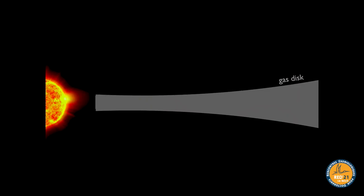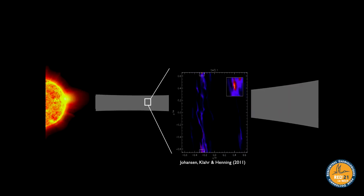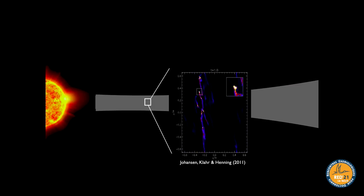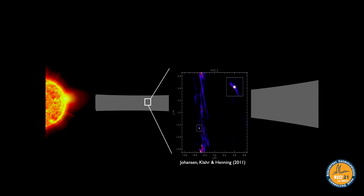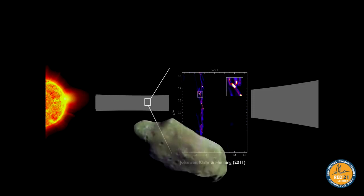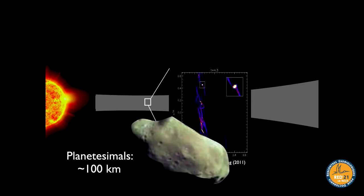Let's rewind and put the planet formation pieces in context. Here's a gaseous planet-forming disk around a young star. The first stage involves pebbles growing and drifting until they find a place with sufficient concentration to clump further via the streaming instability and form planetesimals directly. This recaps what we discussed last time.